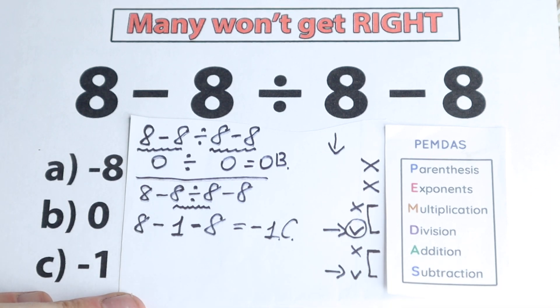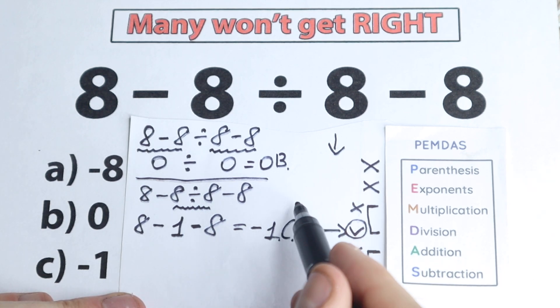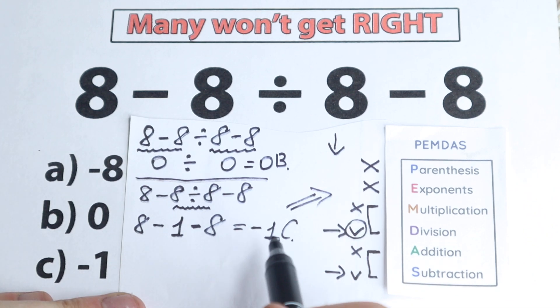And right now here is maybe the main question, which one is correct? This one or this one? Of course, the correct answer is this one, because we solve this according to this PEMDAS order of operation, so our answer is minus 1.